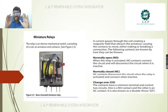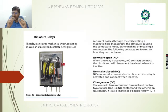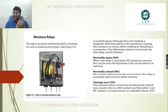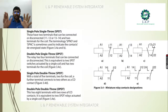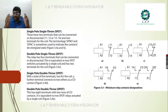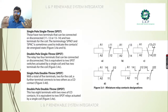A miniature relay is an electromagnetic switch consisting of a coil, armature, and contacts. It performs three functions: normally open, normally closed, and changeover. The first type available in the market is a single pole single throw (SPST), which has two terminals that are connected or disconnected. Next is double pole single throw (DPST), which has four terminals that can be connected or disconnected.